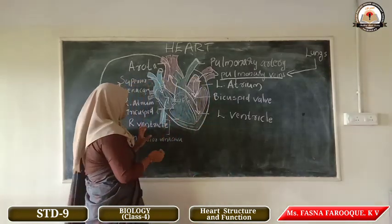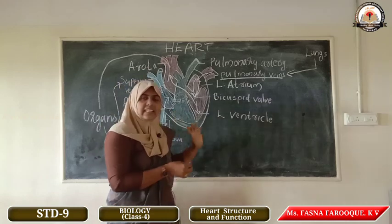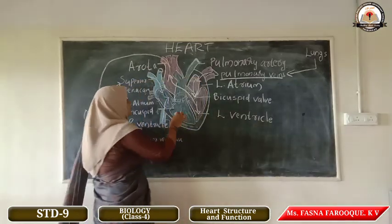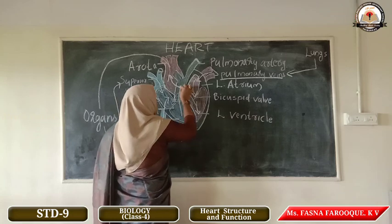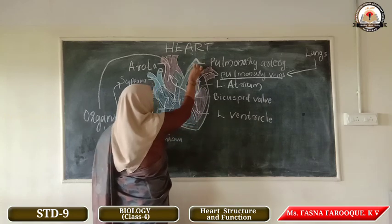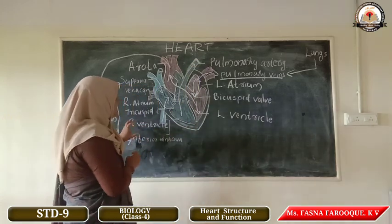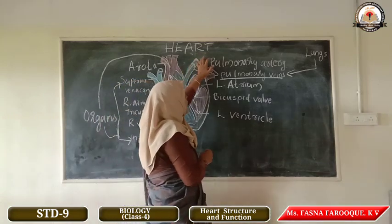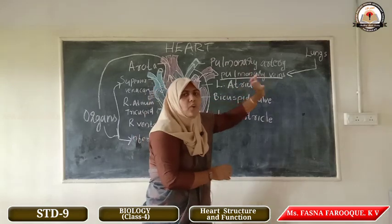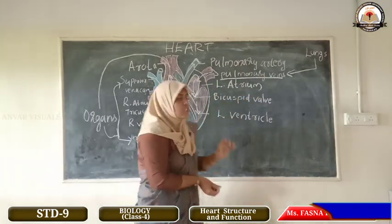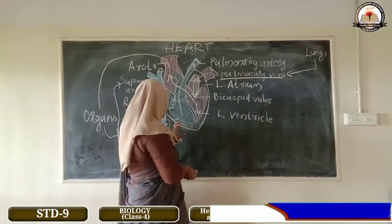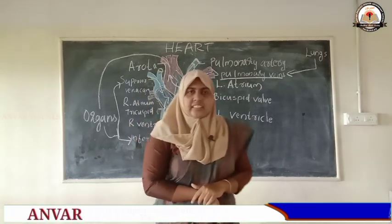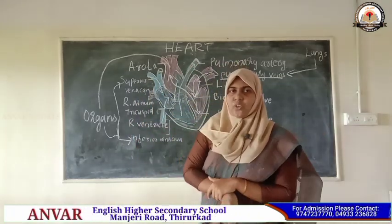When the right ventricle contracts, the blood is pumped to the pulmonary artery. The blood pumped to the pulmonary artery moves to the lungs for purification. The deoxygenated blood moves through the pulmonary artery to the lungs. This is all about the circulation.